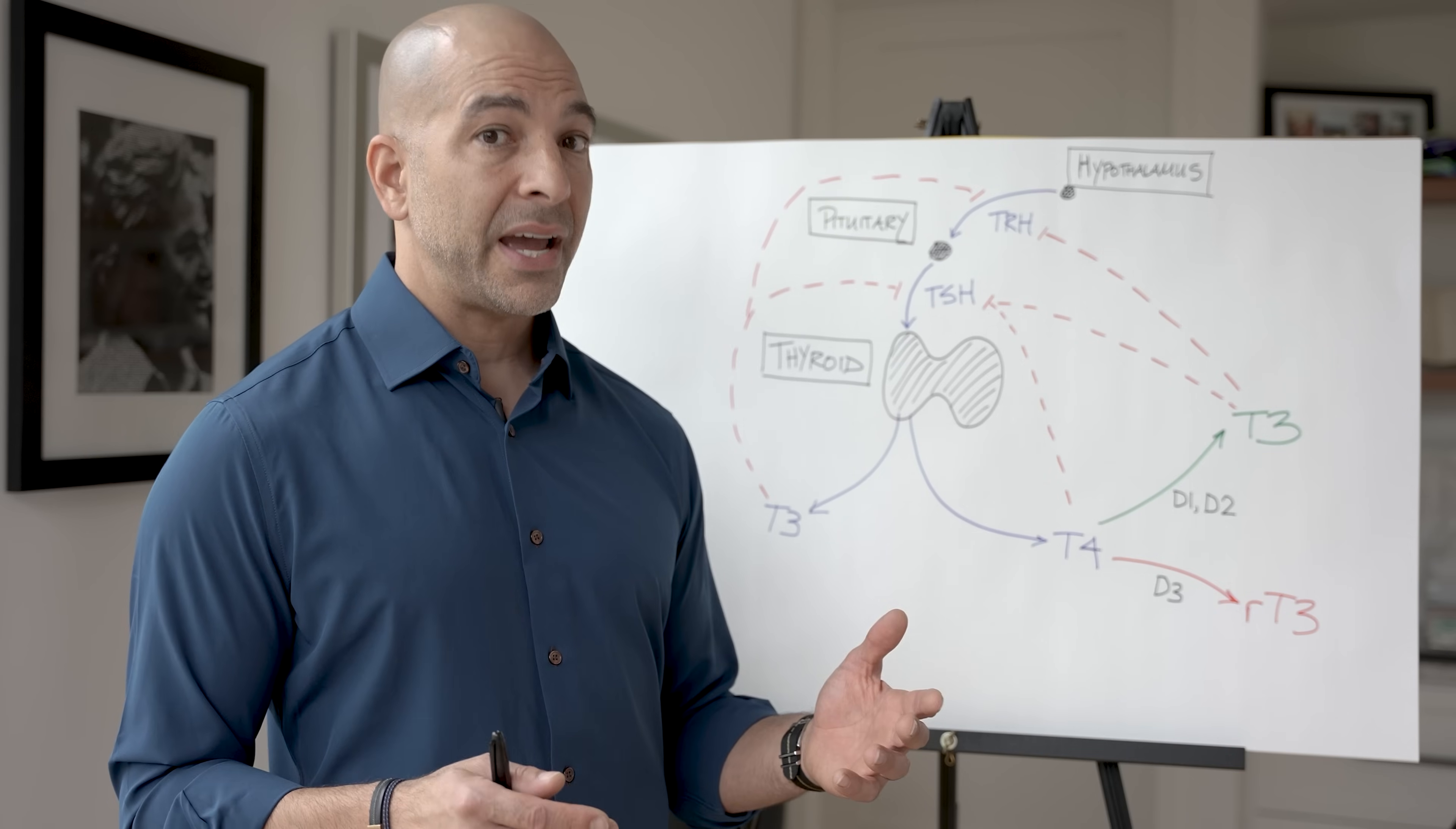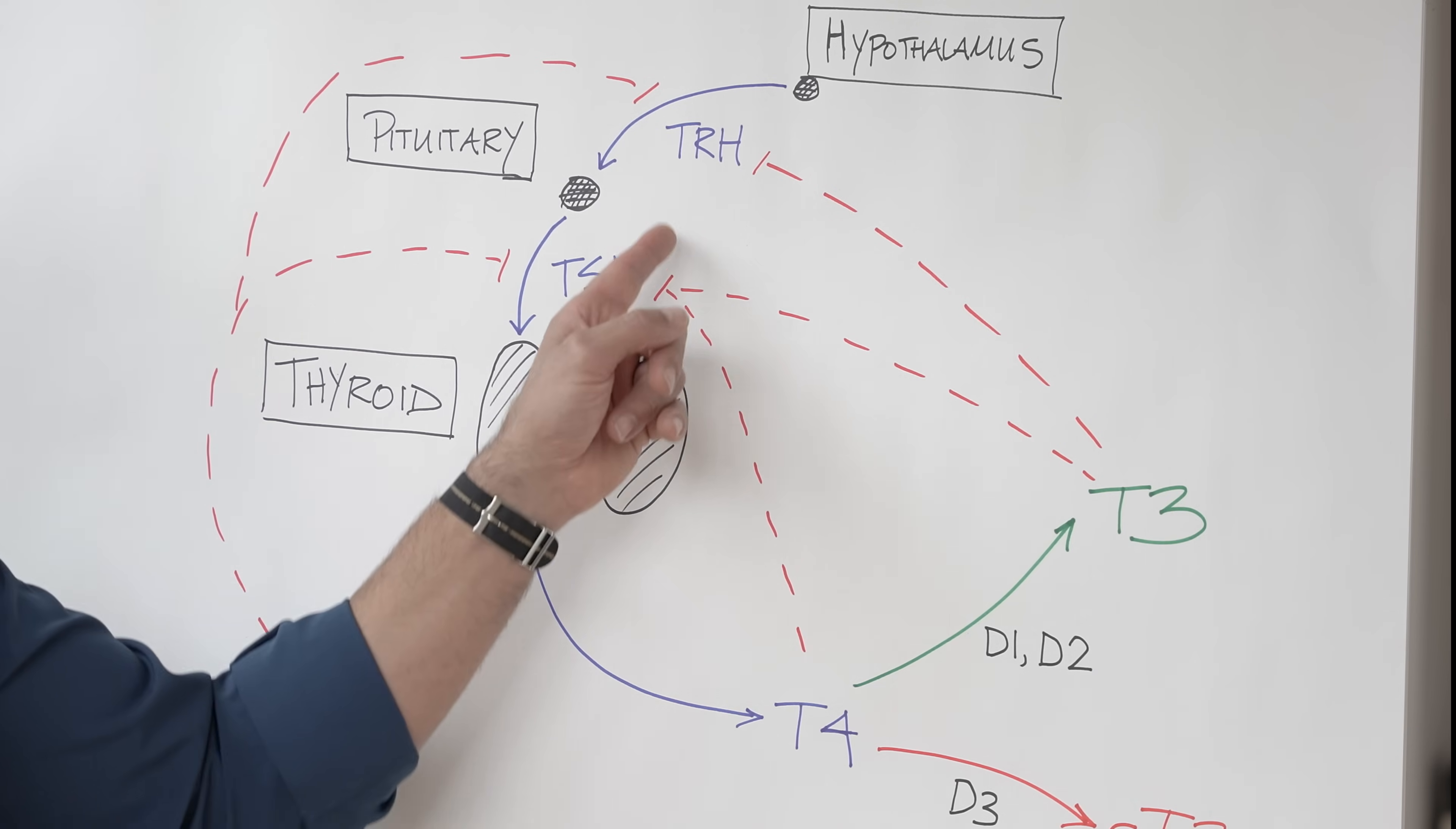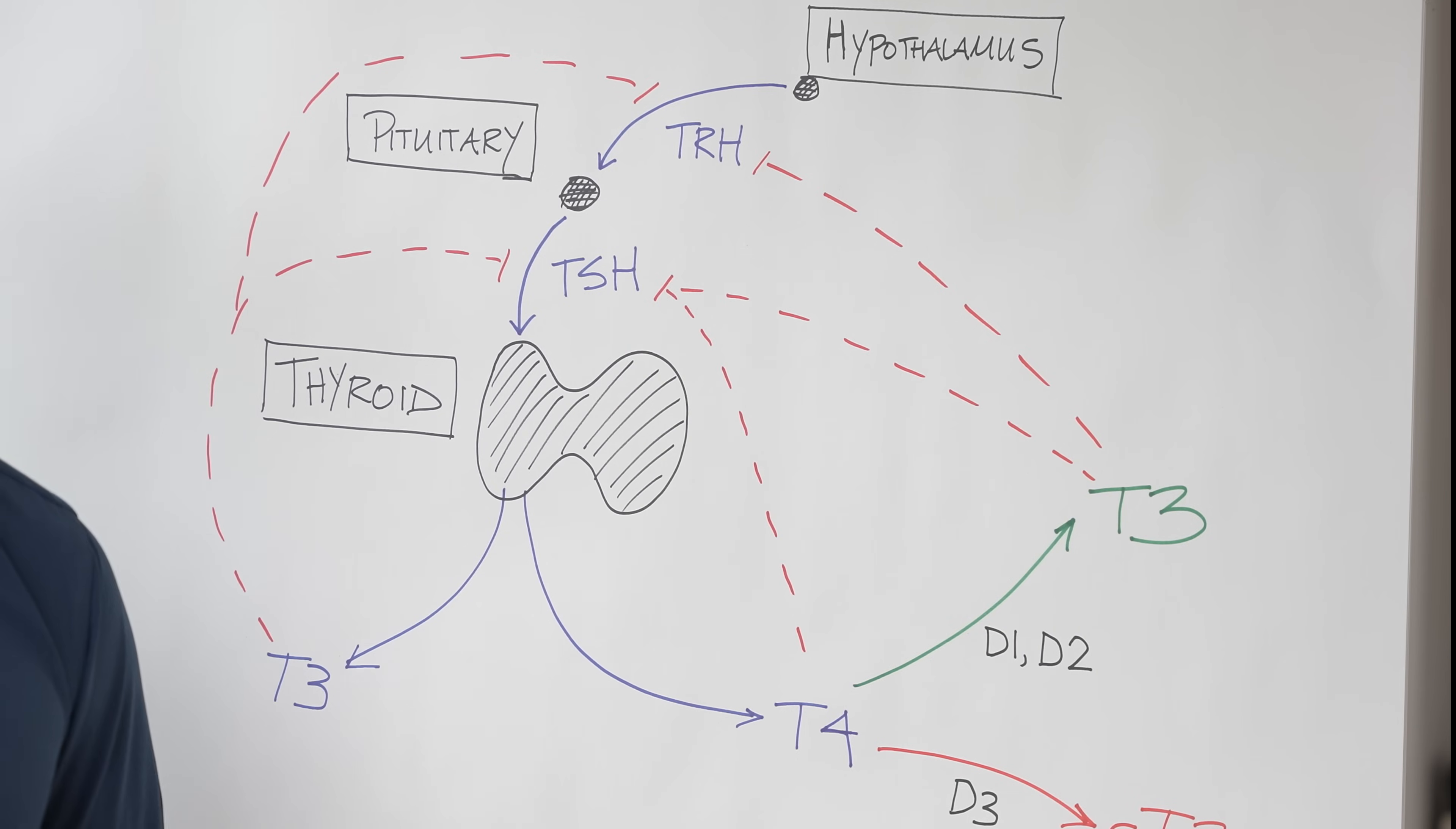If the TSH is very high, what must be true? Well, there must not be much T3 around because it would be inhibiting TSH. If TSH is very, very low, you would be getting a lot of inhibition from these things. You would be in a hyperthyroid state.